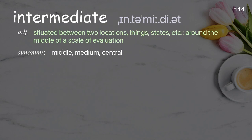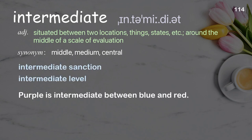Intermediate: situated between two locations, things, or states; around the middle of a scale of evaluation. Examples: intermediate sanction, intermediate level. Purple is intermediate between blue and red.